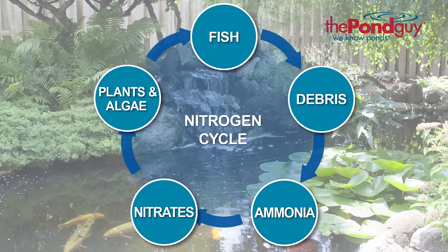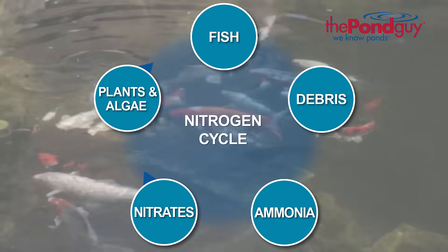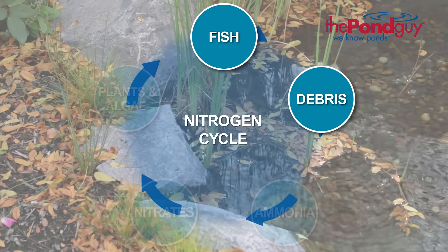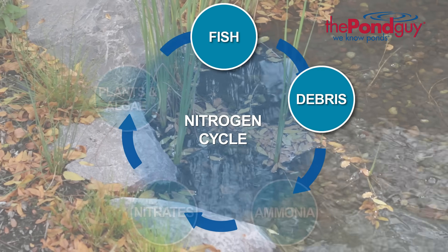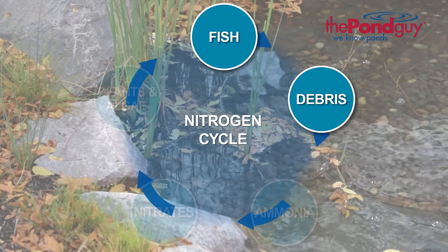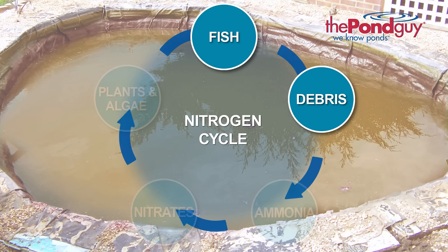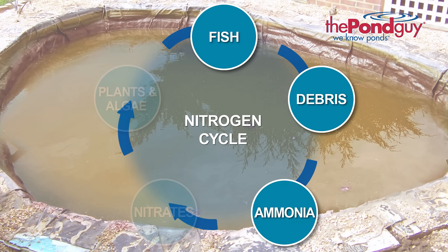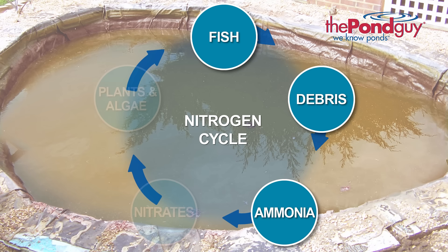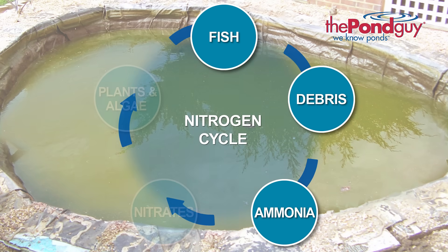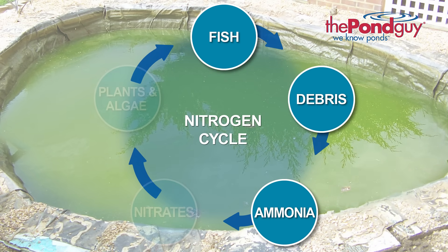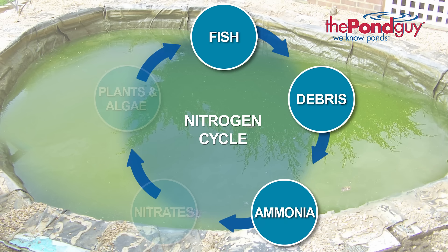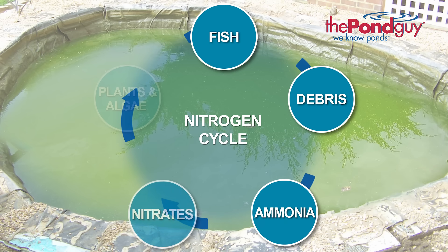In its simplest form, the nitrogen cycle works like this. First, fish are introduced into the pond. In a short time, other debris such as leaves, twigs, and fish waste accumulate in the pond and begin to decay. As they decay, they release ammonia into the water. Ammonia is toxic to aquatic life and at elevated levels can be fatal to fish. With the help of nitrosomonas and nitrobacter, also known as nitrifying bacteria, ammonia is broken down into nitrites and ultimately into nitrates.